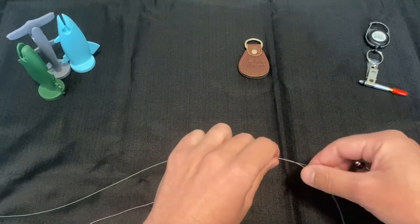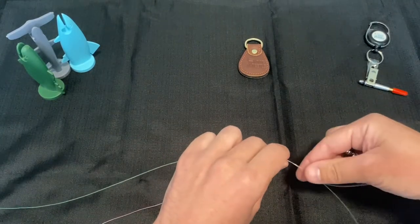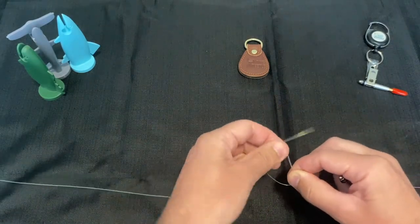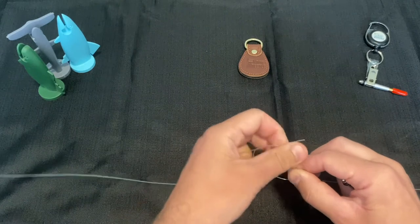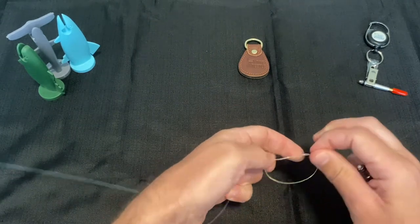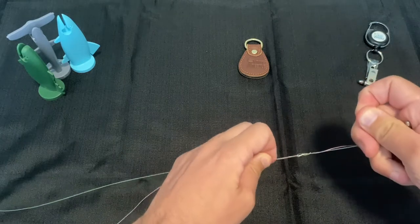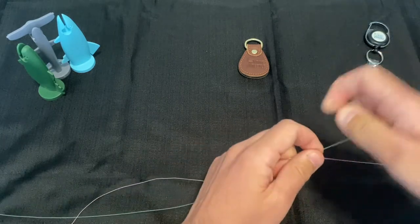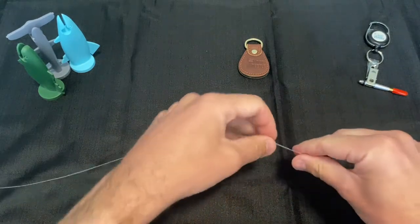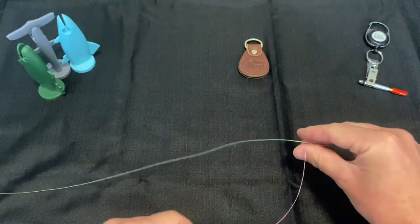The first thing you want to do is a three-turn uni knot. Wet your line here and then cinch it down. That uni knot will act as an anchor for the rest of the knot.